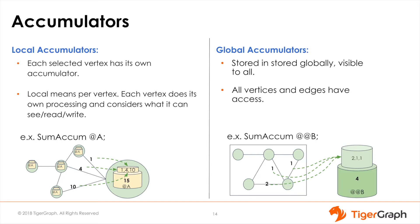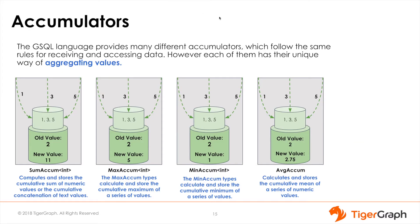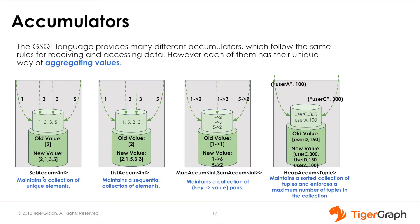There are many types of accumulators. Their names are pretty intuitive, so you can understand what each does just by reading the names. We've also included diagrams to help you visualize what they do. SumAccum keeps a running total of integer values, or a cumulative concatenation of text values passed in. MaxAccum and MinAccum store the greatest or least value passed into the accumulator, only accepting numerical values. AvgAccum stores the running average of numerical values. SetAccum maintains a set of unique elements, not allowing any repeat elements. ListAccum accumulates a list of elements in the order in which they were passed in. MapAccum stores data like a map, using key-value pairs.